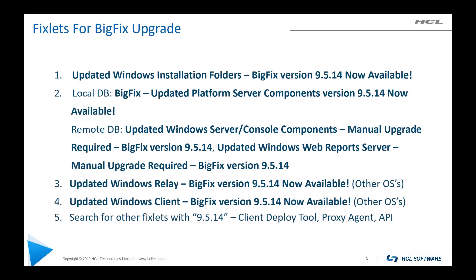This fixlet will upgrade the server, consoles, and web reports. Now, if you're on a remote database, then you will have two different fixlets — one to upgrade the server and console, and another one to upgrade web reports. The description tabs on both fixlets will have manual instructions on how to do so for the remote databases. After your server, consoles, and web reports have been upgraded, you will have fixlets to upgrade the relays. The fixlet name in number three is for Windows operating systems — this will vary depending on what relays you have in your environment on other operating systems, so you may see additional fixlets.